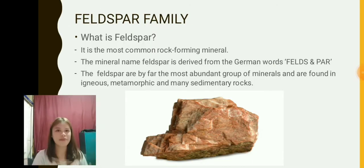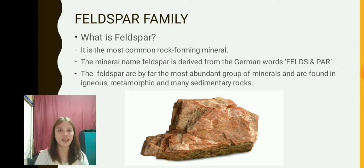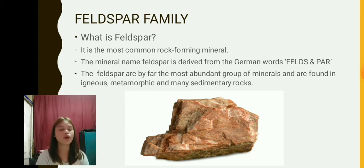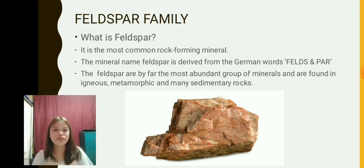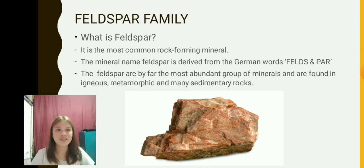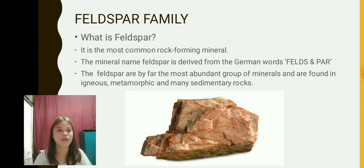Feldspar family. What is feldspar? It is the most common rock-forming mineral. The mineral name feldspar is derived from the German words 'felds' and 'par.' Feldspars are by far the most abundant group of minerals and are found in igneous, metamorphic, and many sedimentary rocks.